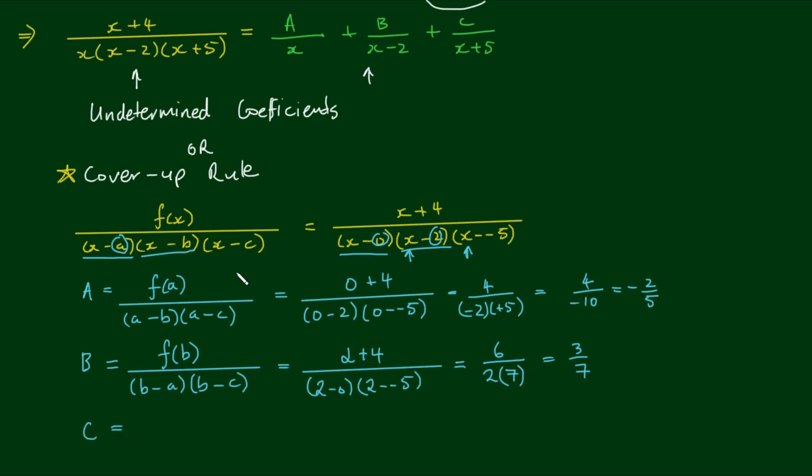For the constant C, cover up the factor x minus c and take the number negative 5. We have f of c divided by c minus a times c minus b. This gives negative 5 plus 4 divided by negative 5 minus 0 times negative 5 minus 2, so negative 1 on negative 5 times negative 7, which equals negative 1 on negative 35, which equals 1 on 35.